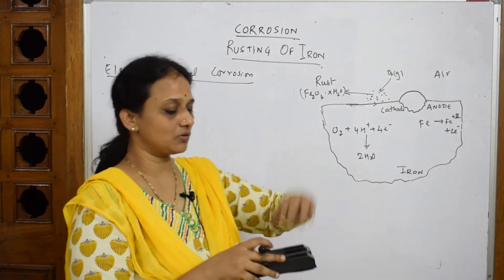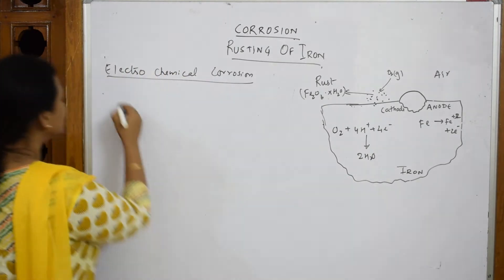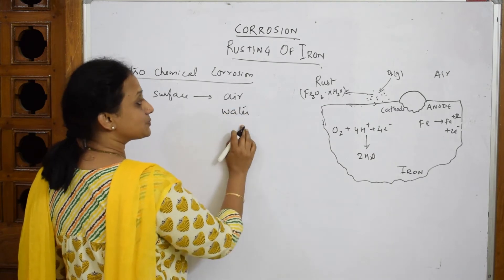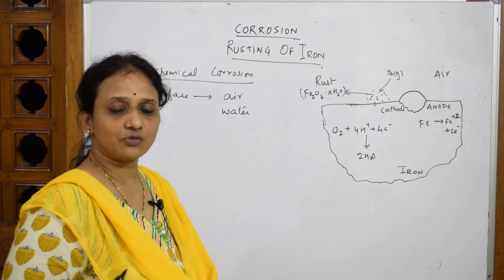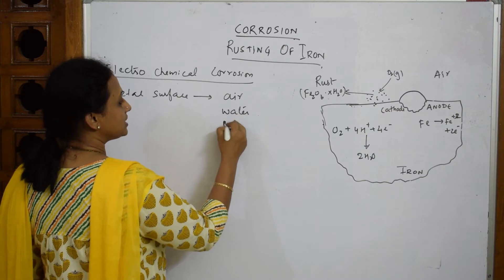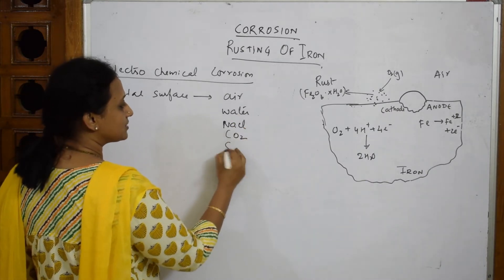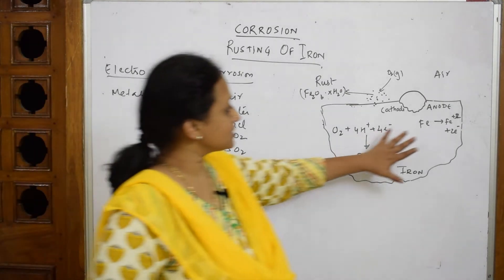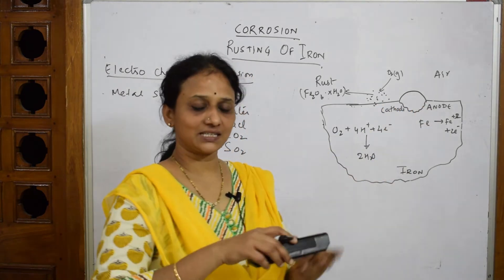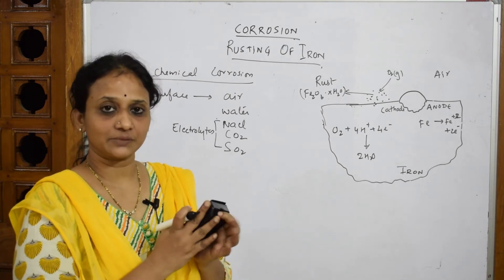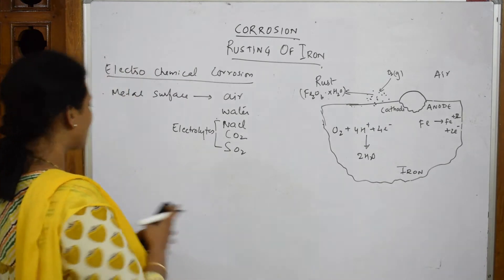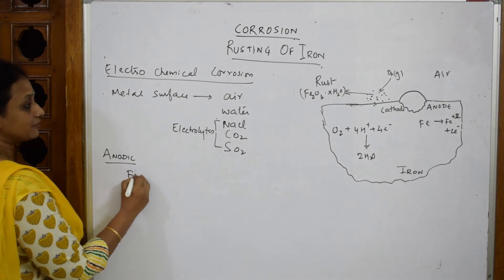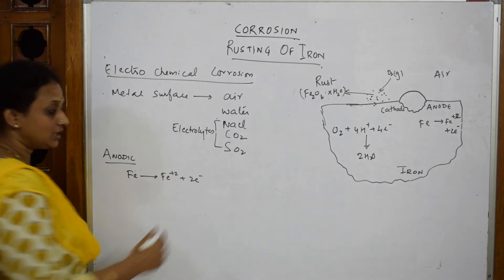Suppose this is a metal surface, which is always exposed to environmental conditions — air, water, and electrolytes such as NaCl salts, CO₂, and SO₂ from vehicles. During this process, the metal surface starts acting as two sites: the anodic site and the cathodic site. At the anodic site, oxidation occurs: Fe → Fe²⁺ + 2e⁻, with E° = −0.44 V.